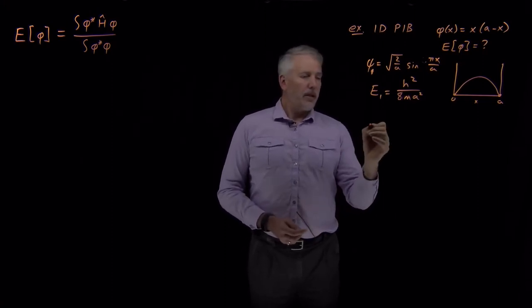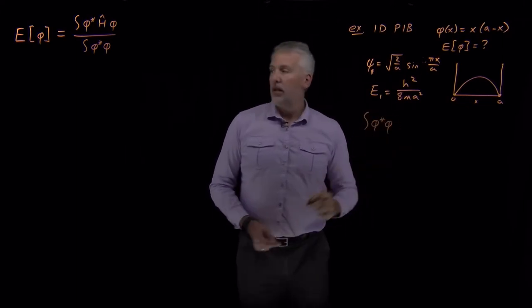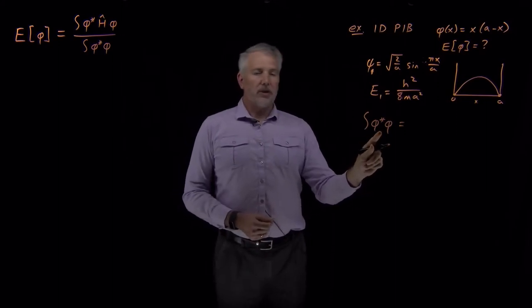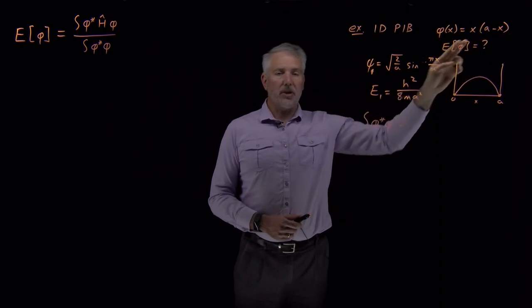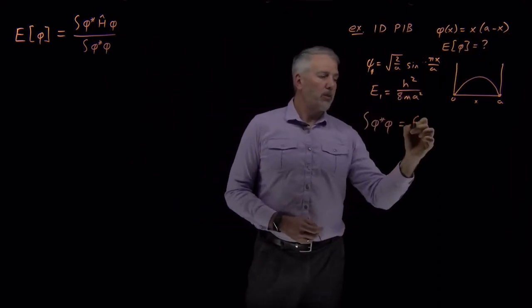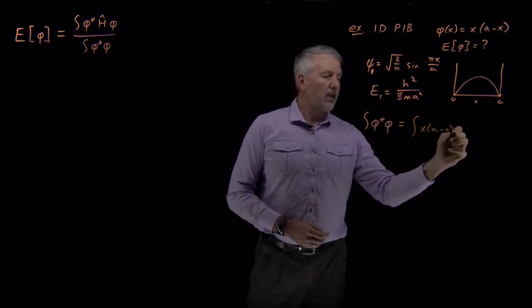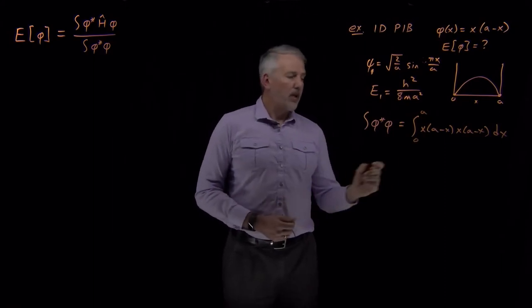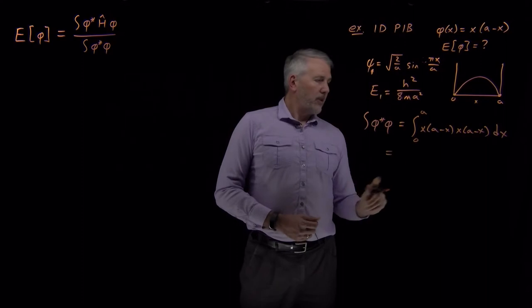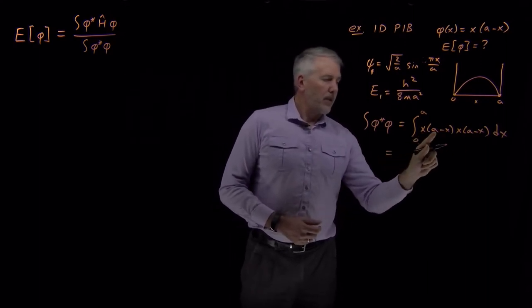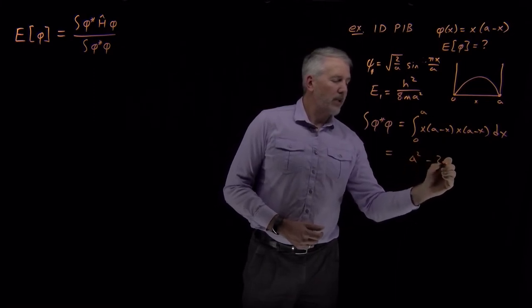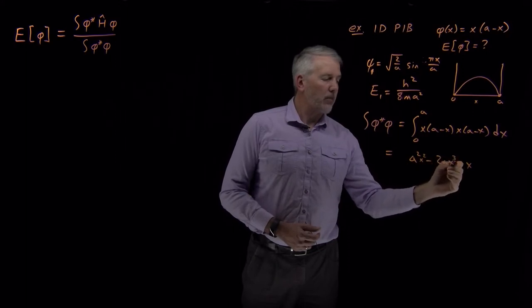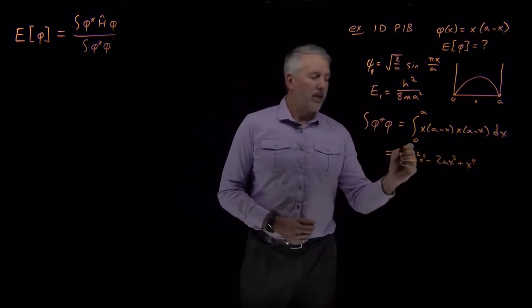Let's see if we can figure out what the variational energy of that trial solution is. We'll start by calculating the quantity in the denominator, doing these two integrals one at a time. To calculate the integral of the trial function times itself, we don't need to worry about the complex conjugate since there are no complex terms. This is the integral of x times (a minus x), squared, integrated over x from zero to a. Expanding: x squared times (a squared minus 2ax plus x squared), giving terms in x squared, x cubed, and x to the fourth.